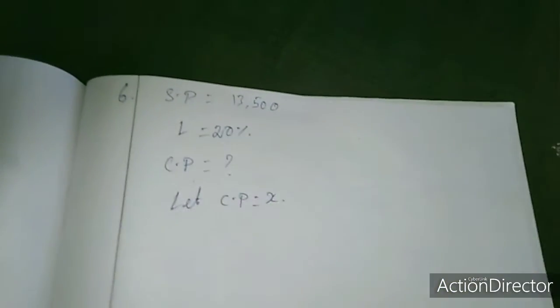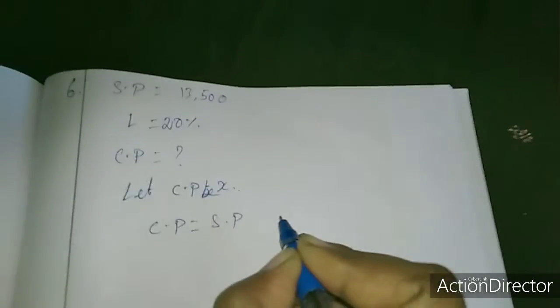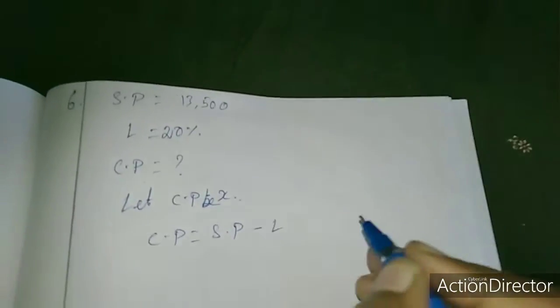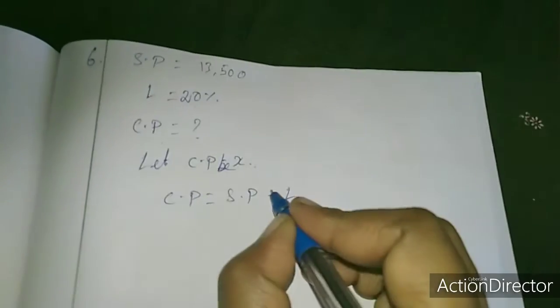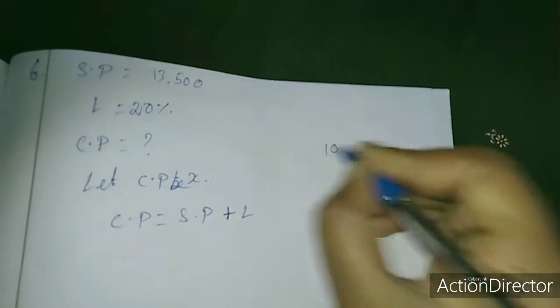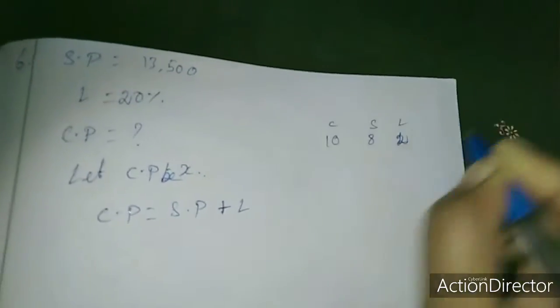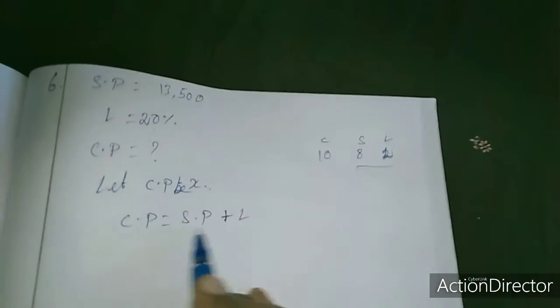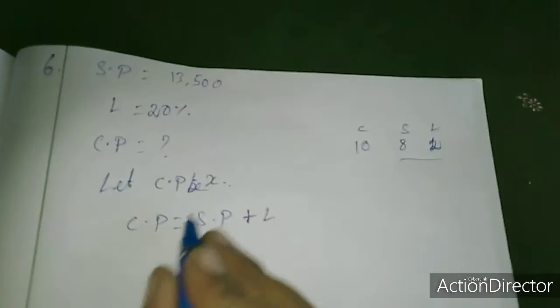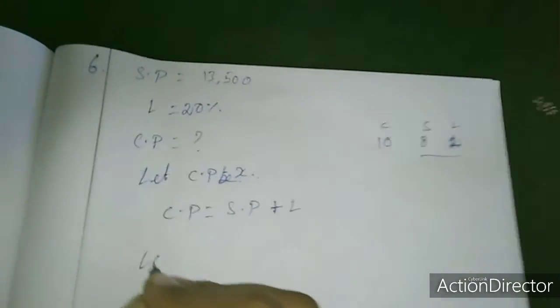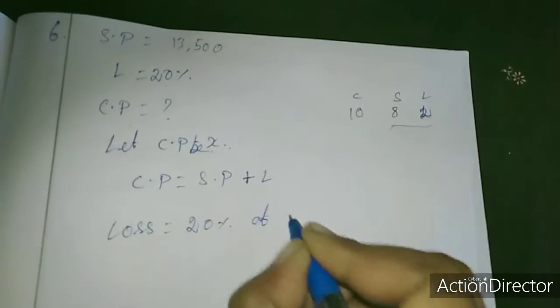Let cost price equal x. We know that cost price equals selling price plus loss. Loss is 20% of cost price, which is x/5. So the equation is: x equals 13,500 plus x/5.